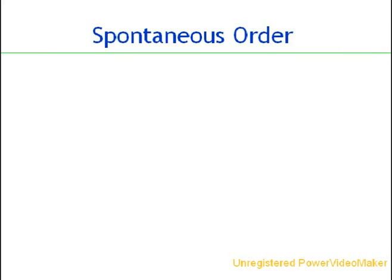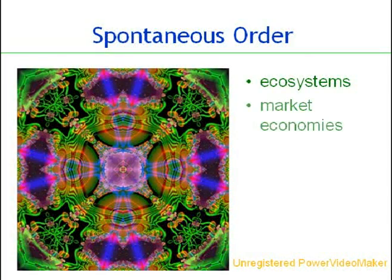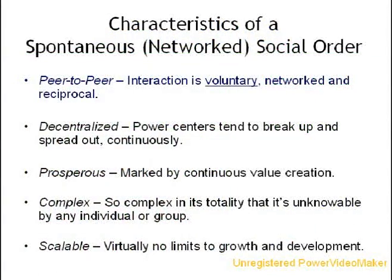Examples of spontaneous social orders include ecosystems, market economies, and the internet. There are some transitional or hybrid organizations with characteristics of both a hierarchy and a network, but spontaneous orders are marked far more by characteristics of the latter. The defining characteristics of a spontaneous order are: peer-to-peer interaction that is voluntary, networked, and reciprocal; decentralized, with power centers tending to break up and spread out continuously; prosperous, marked by continuous value creation; complex — so complex in its totality it's unknowable by any individual or group; and scalable, with virtually no limits to growth and development.